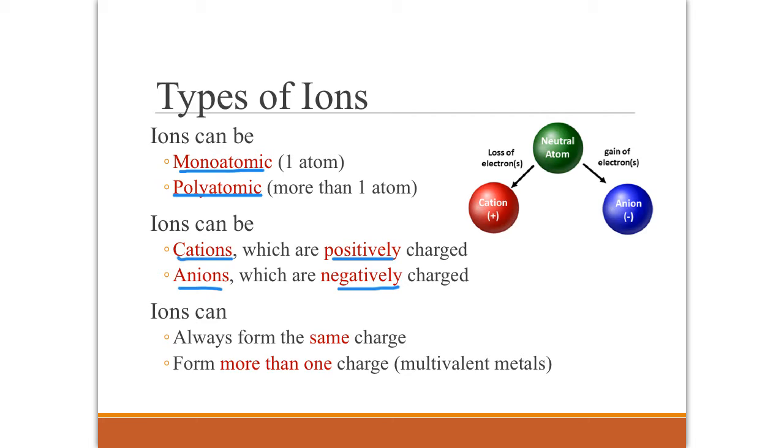And then ions can always form the same charge. They always are a plus two or they always are a minus two. Or some ions, some metals, can form more than one possible charge. And these are known as multivalent metals. And we have to consider them in kind of a separate category from our other ions.